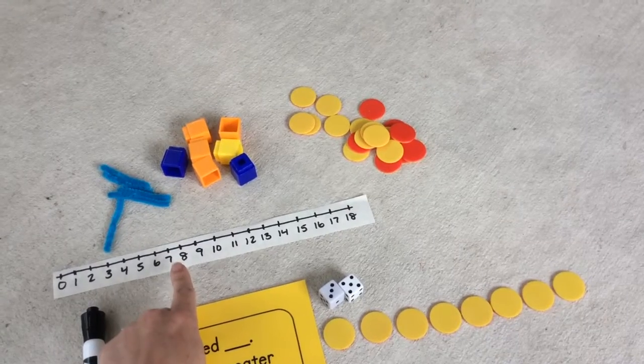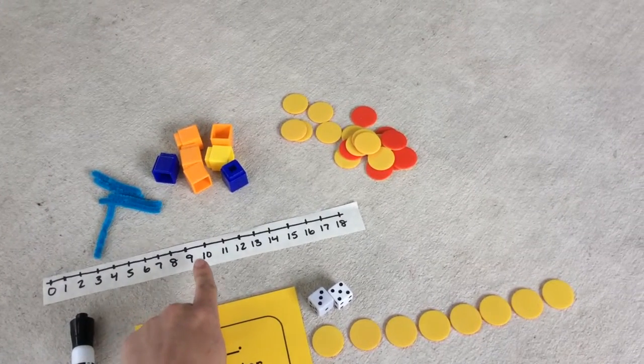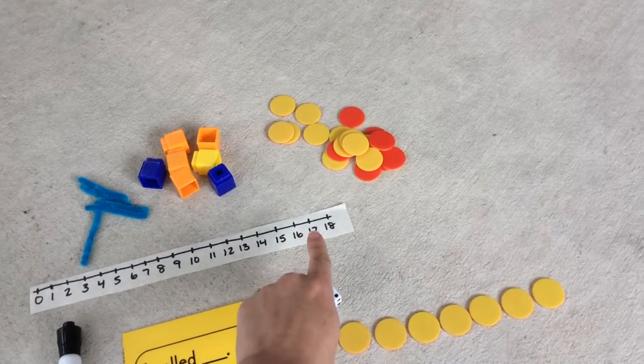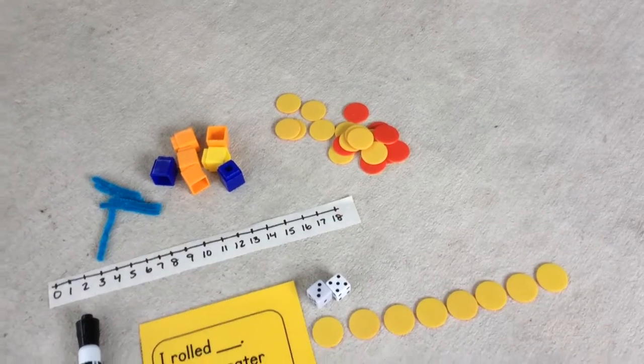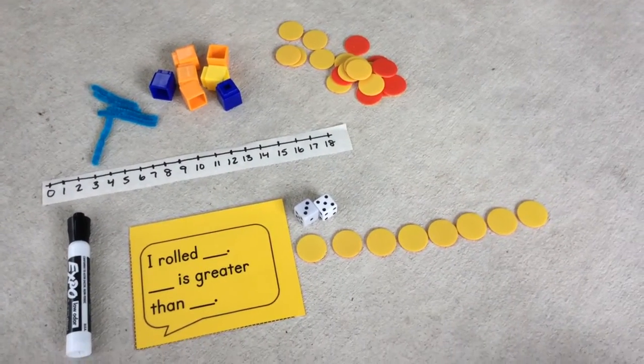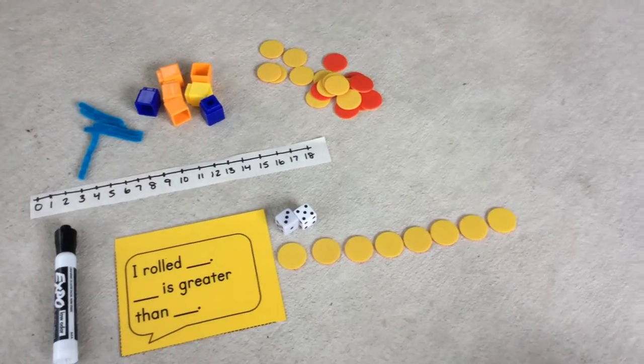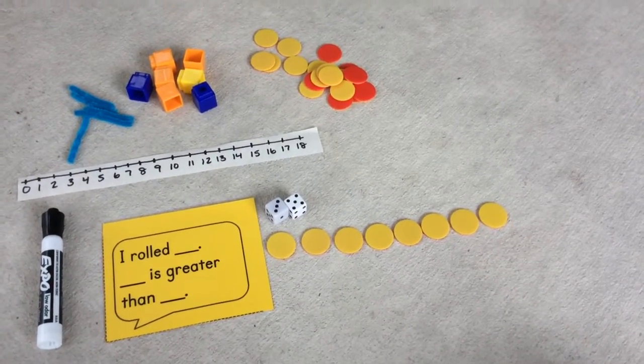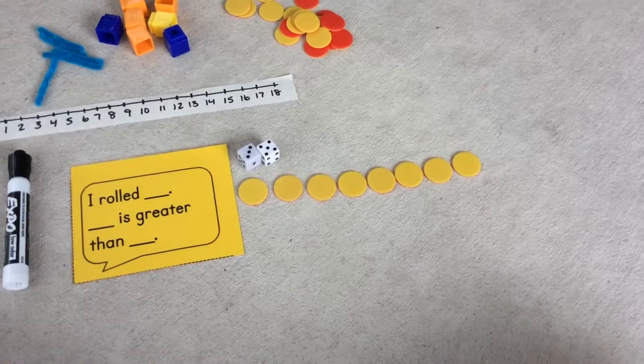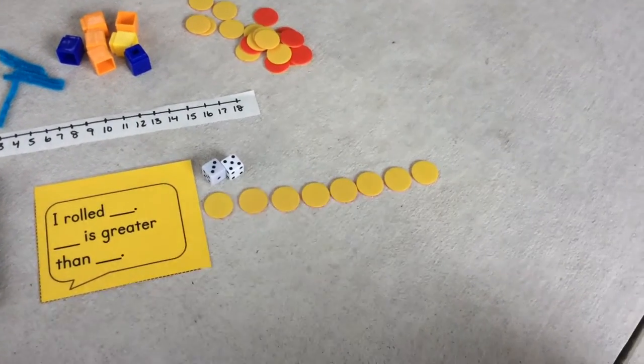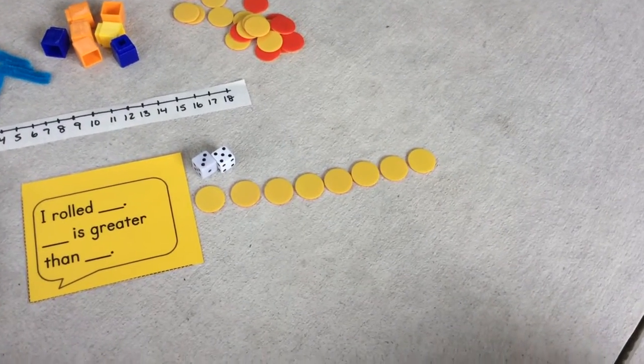So on a number line, it is going to be farther down the number line past eight. So I think I'm going to make the number 12. I think 12 is greater than eight. So now I want to make a set of counters to test my idea that 12 is greater than eight.